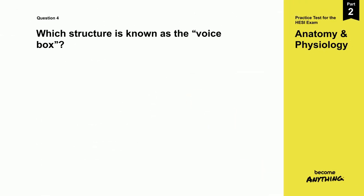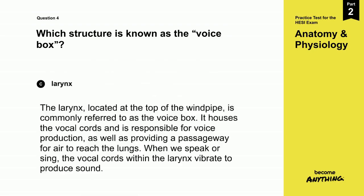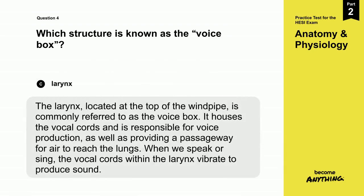The correct answer is C. Larynx. The larynx, located at the top of the windpipe, is commonly referred to as the voice box. It houses the vocal cords and is responsible for voice production, as well as providing a passageway for air to reach the lungs. When we speak or sing, the vocal cords within the larynx vibrate to produce sound.